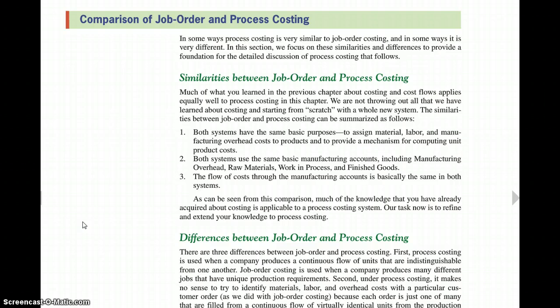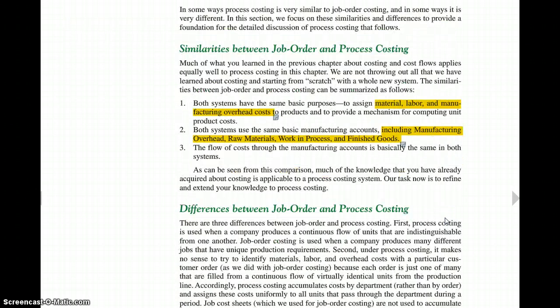There are some similarities between job order costing and process costing. They both have the same purpose, which is to assign material, labor, and manufacturing overhead costs to products and to provide a mechanism for computing unit and product costs. Both systems have the same basic manufacturing accounts, including manufacturing overhead, raw materials, and work in process and finished goods. So remembering that raw materials are inventory accounts, and they follow the cost of manufacturing through basically the same in both systems.